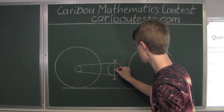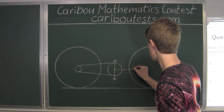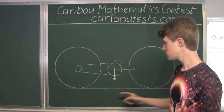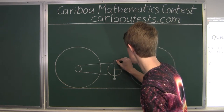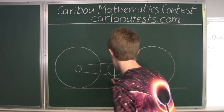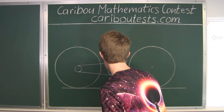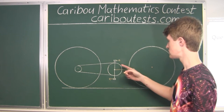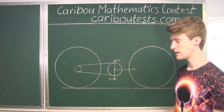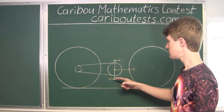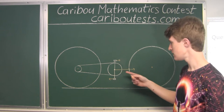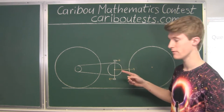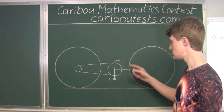This arrow represents the vector for the velocity of the bike frame in relation to the street, and these two arrows represent the vectors for the velocities of the bike pedals in relation to the bike frame. I drew this arrow much longer because the absolute value for the velocity of the bike frame in relation to the street is much higher than the absolute value for the velocities of the bike pedals in relation to the bike frame.